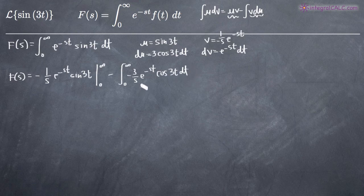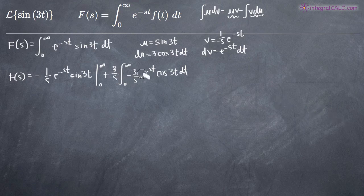Remember that s is a constant, so this negative 3 over s is a constant that can come out in front of the integral. Since we have two negatives, we go ahead and make this a positive 3 over s, and bring that out in front to simplify as much as possible.